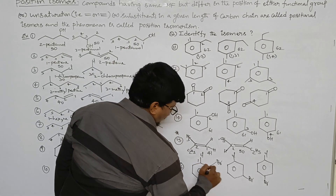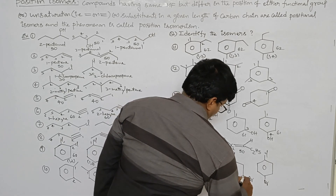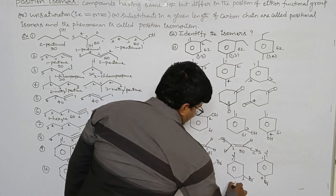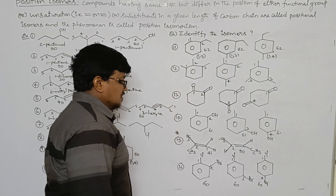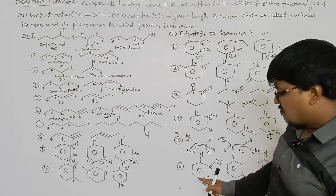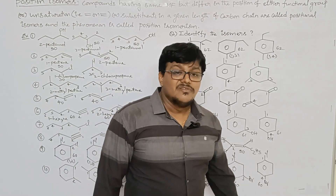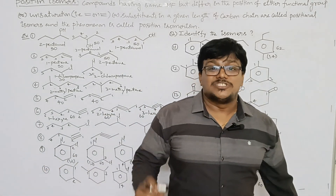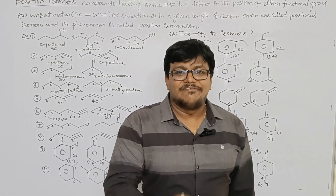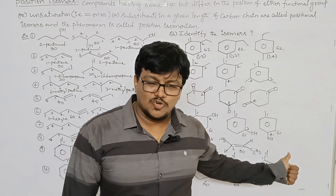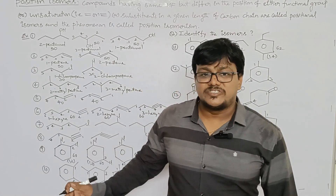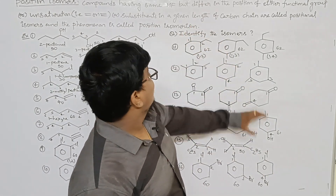The 16th example: chlorine and bromine are present at the 1,2 position in the first compound; at the 1,3 position in the second compound; and at the 1,4 position in the third compound. Positional isomers means compounds having the same molecular formula but differing in the position of either functional groups, unsaturation — double bond or triple bond — or substituents present in the given length of the carbon chain.